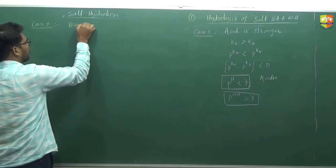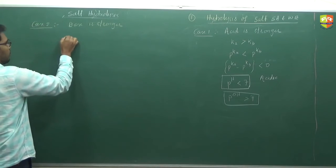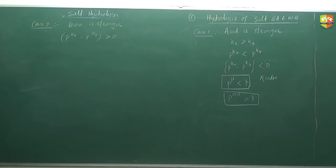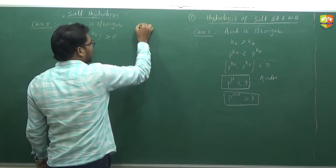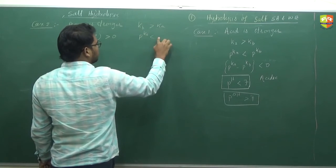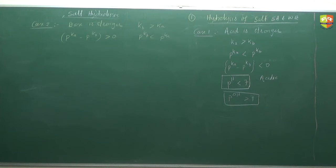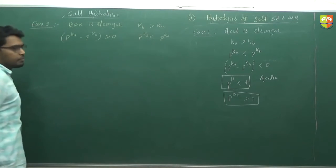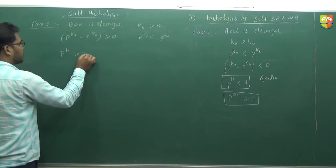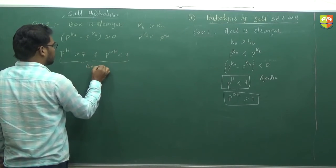Case 2: if the base is stronger, then pKb is less than pKa, so pKa minus pKb is positive and greater than zero. In this case pH is greater than 7 and pOH is less than 7, so the solution is basic.